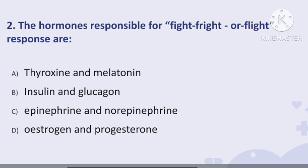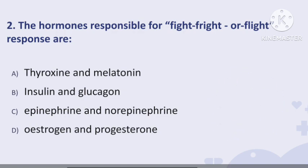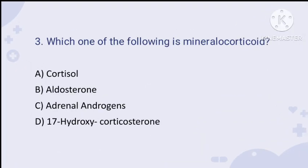Question number two: the hormones responsible for fight, fright, or flight responses. These are the hormones produced by the adrenal gland, also called emergency hormones. Option A is thyroxine and melatonin, option B is insulin and glucagon, option C is epinephrine and norepinephrine, option D is estrogen and progesterone. The right answer is option C — epinephrine and norepinephrine — responsible for flight or fight responses in humans.